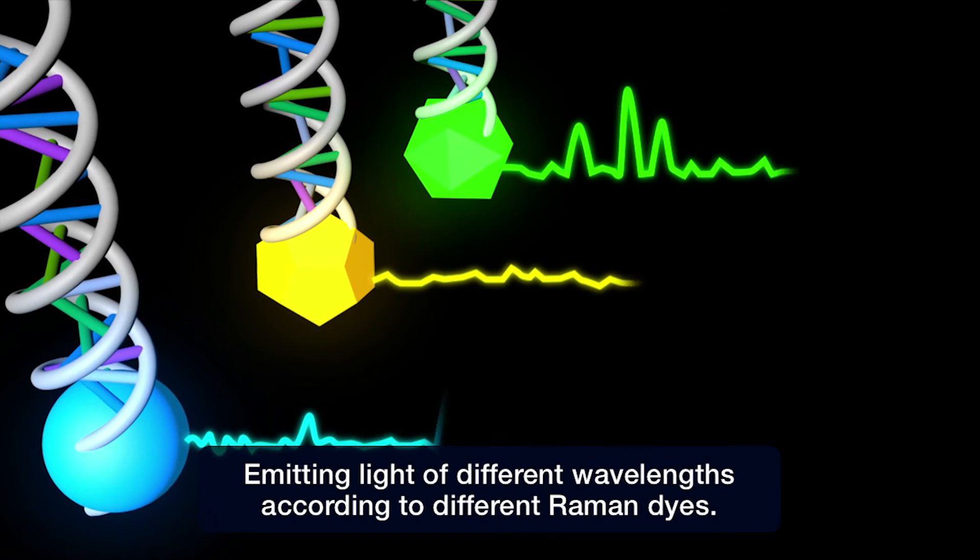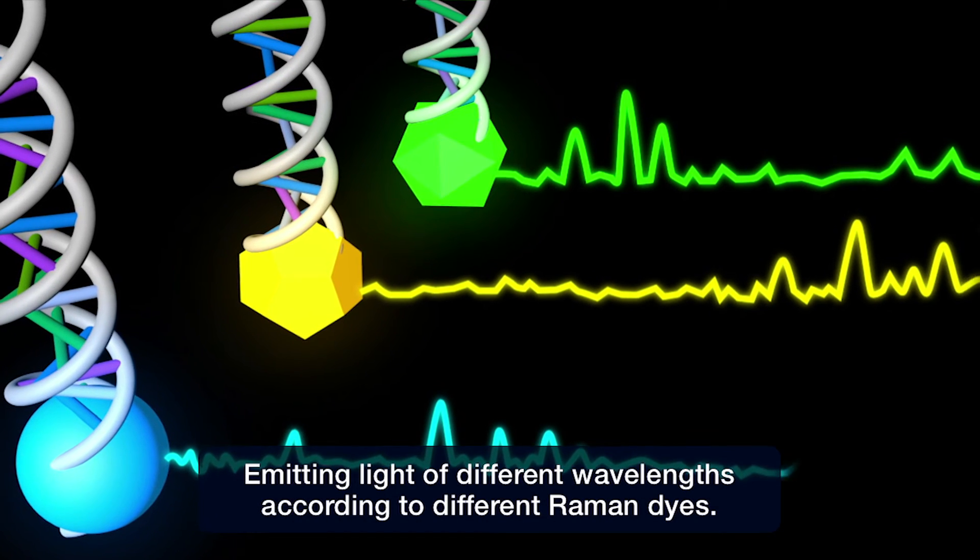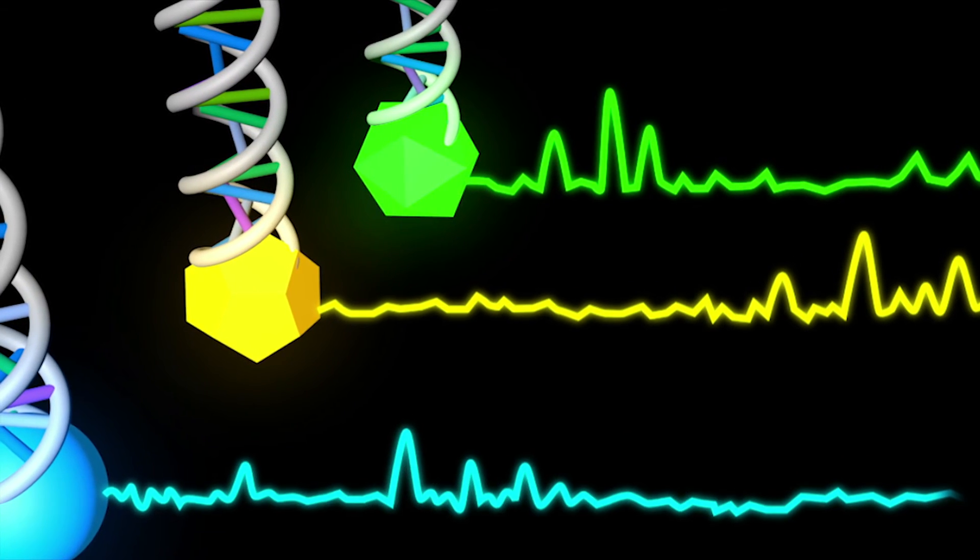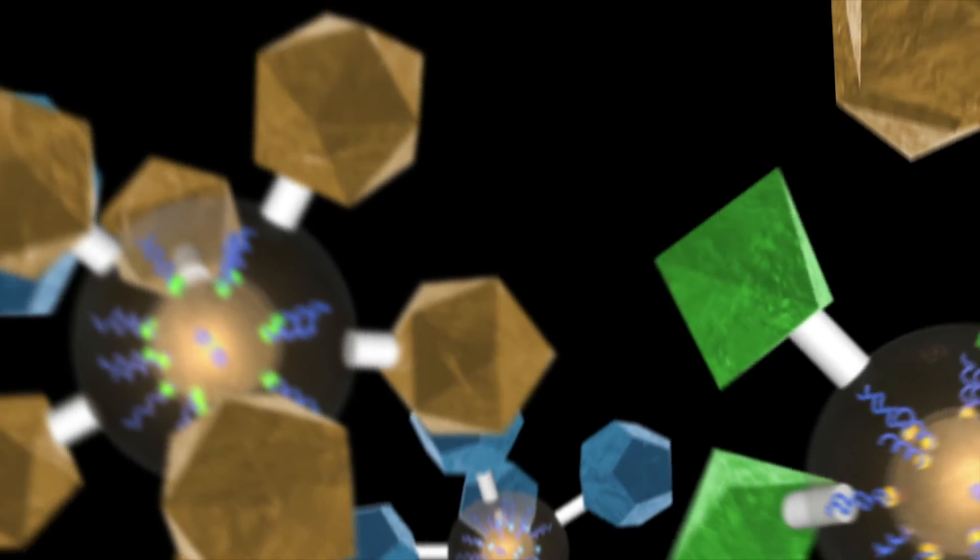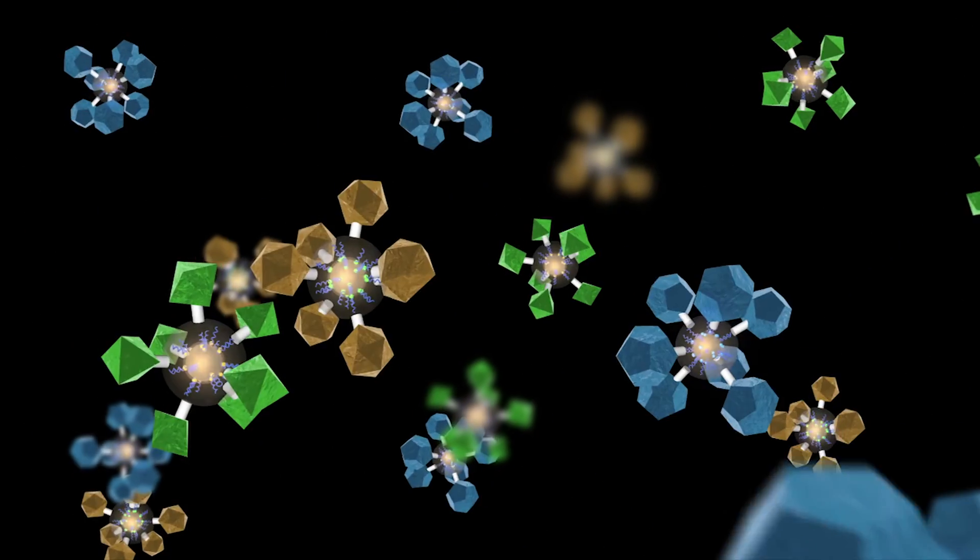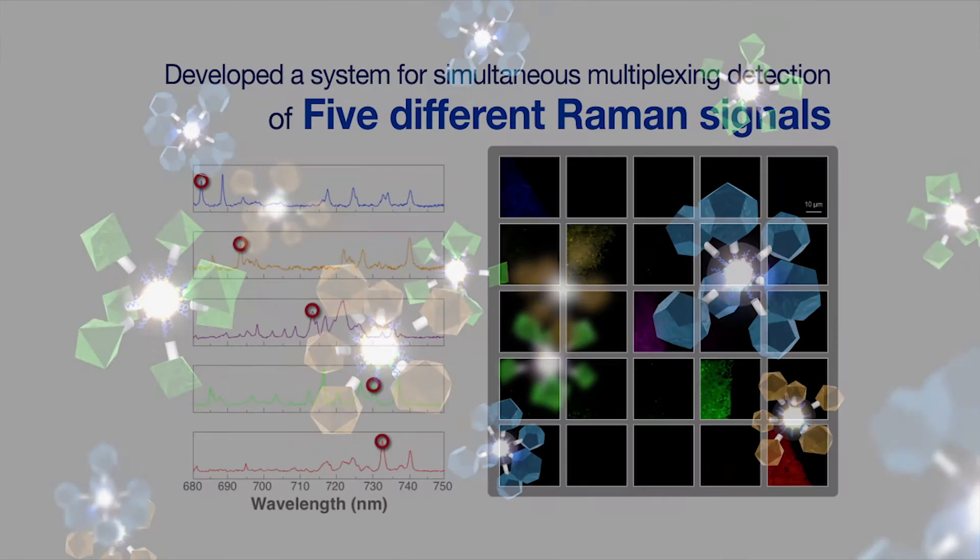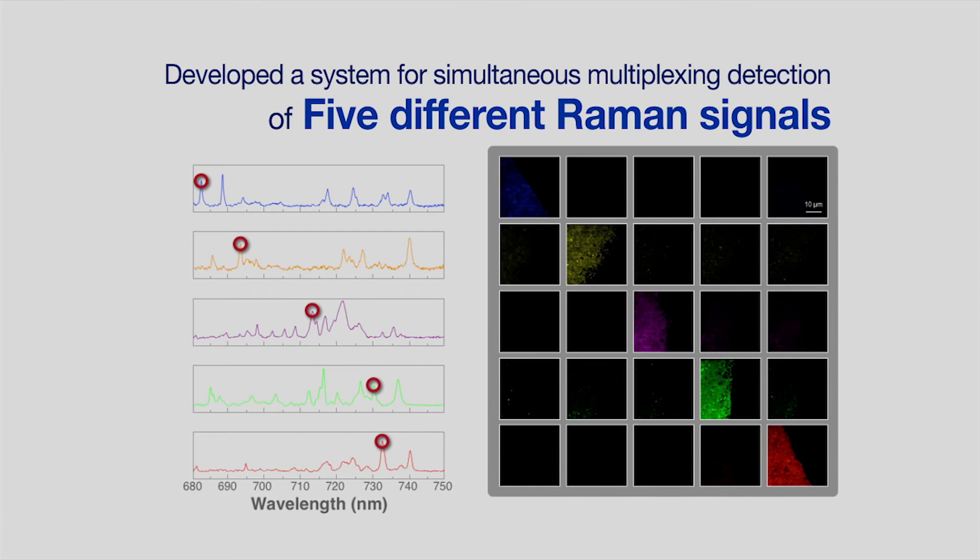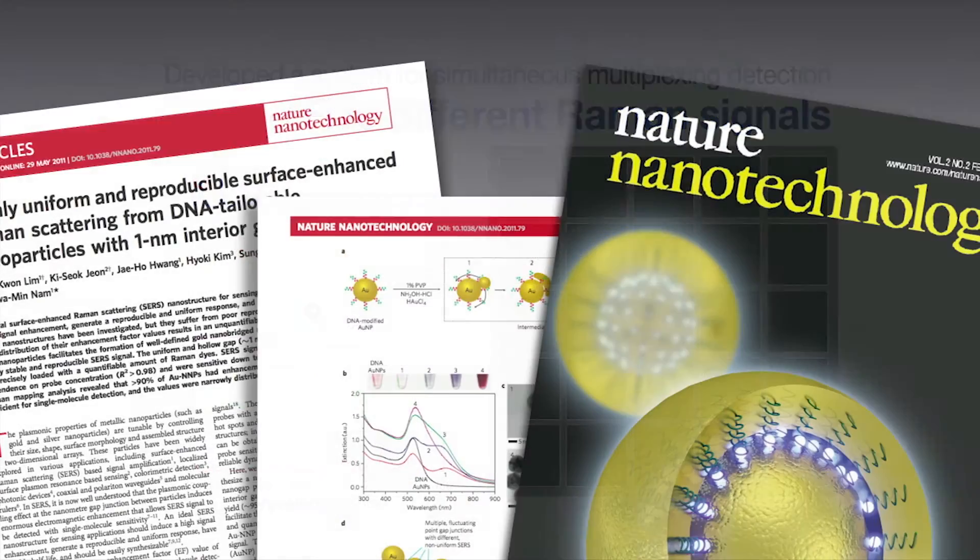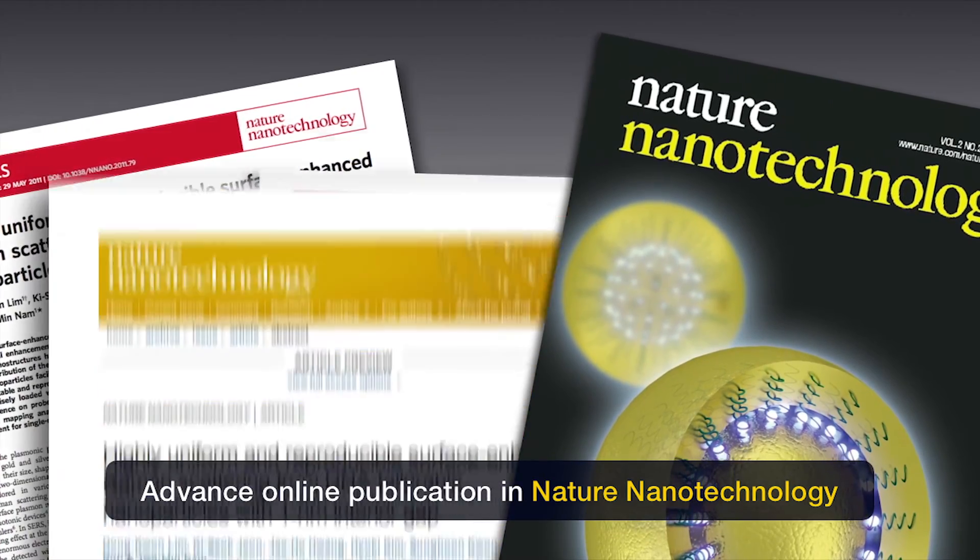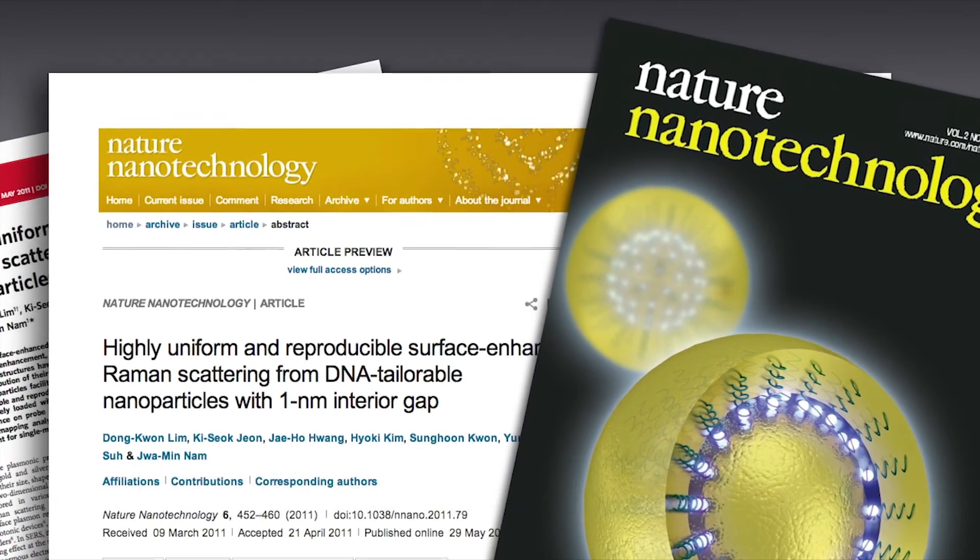These gold sphere NERPs exhibit different Raman spectra according to the different Raman dyes implanted in them. Therefore, we can put in several Raman probes at the same time and then investigate them all together. This research team has now established more than five color multiplexing detection and imaging strategy. This research has been published in Nature Nanotechnology and cited more than 150 times now.